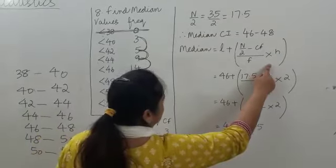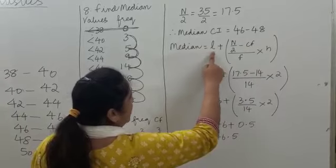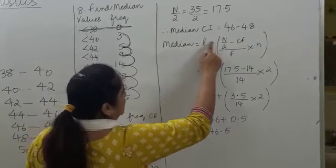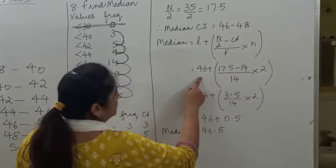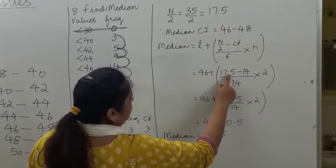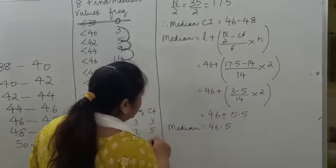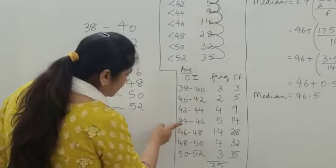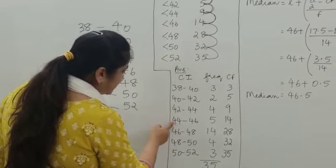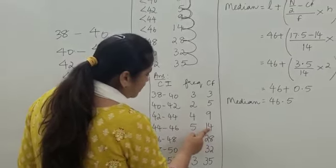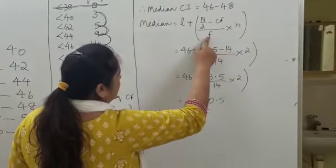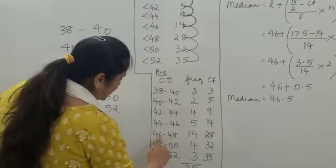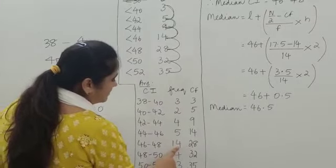The formula to find the median is: Median = L + ((n/2 − cf) / f) × h. Here, L is the lower limit of the median class, which is 46. n/2 is 17.5. cf is the cumulative frequency of the class preceding the median class — that class interval has a cumulative frequency of 14, so cf equals 14. f is the frequency of the median class interval, which is 14.